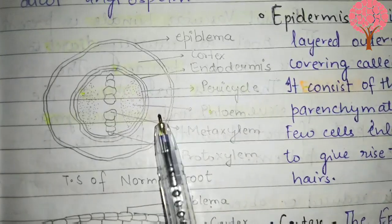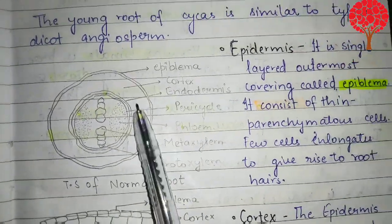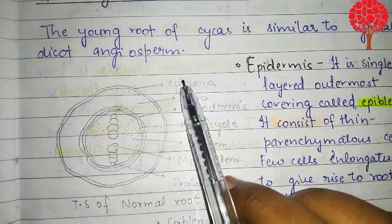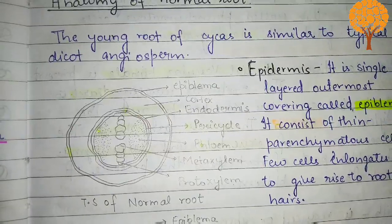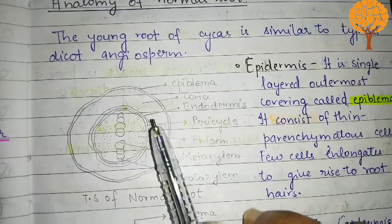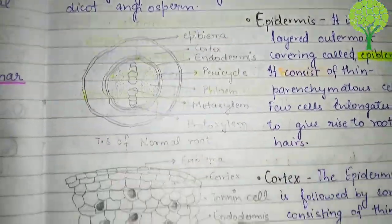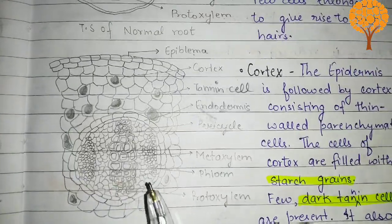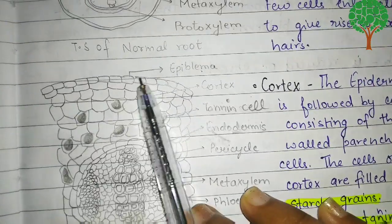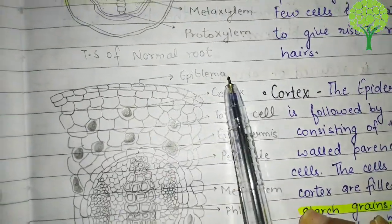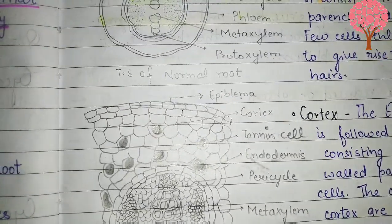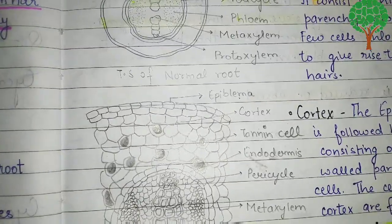Here is the diagram of the transverse section of the normal root. We can see the outermost layer — the epidermis, also called epiblema. This epiblema is single-layered and consists of thin-walled parenchymatous cells, and some cells get elongated to form root hairs. Unicellular root hairs are present. Root hairs are always unicellular.